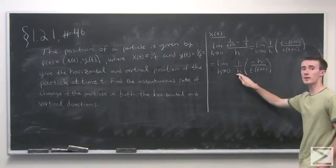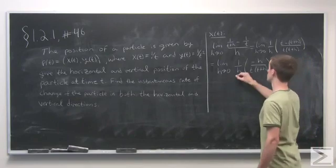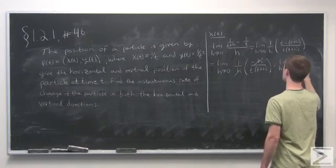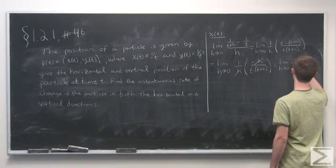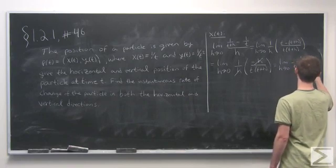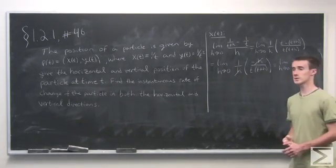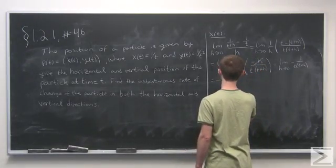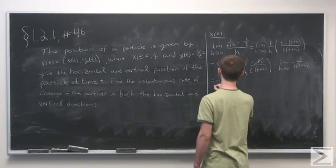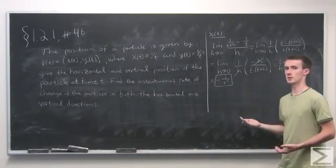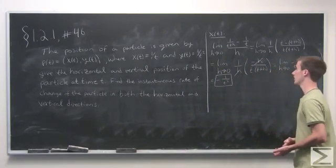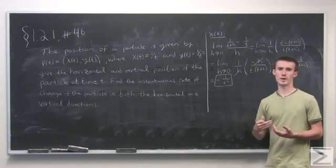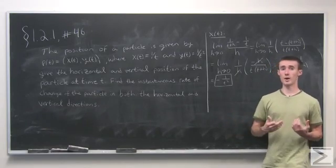Fortunately, the troublesome h in the denominator, which was preventing us from substituting h equals 0, cancels out. So we now have the limit as h goes to 0 of negative 1 over t times t plus h. This is perfectly well defined when we substitute h equals 0, giving us negative 1 over t squared. This is in units of distance over time, and gives the instantaneous rate of change in the x direction — how fast the particle is moving along the x-axis, with the sign indicating direction.